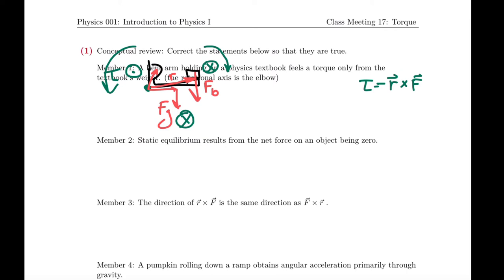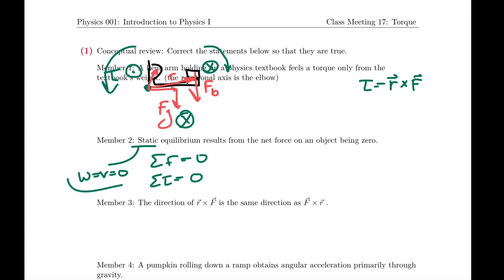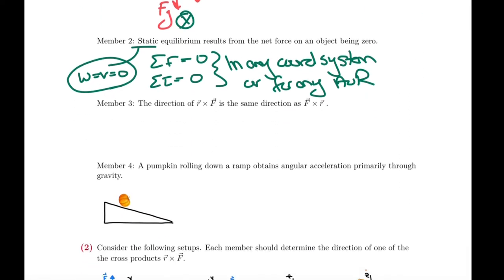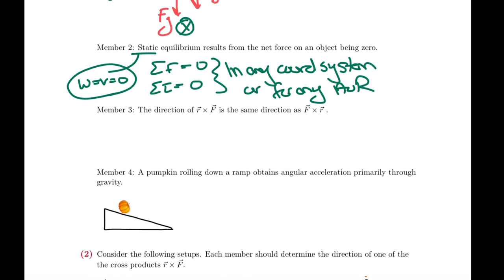Static equilibrium results when the net force on an object is zero, there's no net torque, and if we really want to be precise, omega and v are also zero — nothing is moving and nothing gets moving. This must be true for any axis of rotation you choose — you can specify the axis to be whatever you want, measure the torques from that axis, and you must get zero.